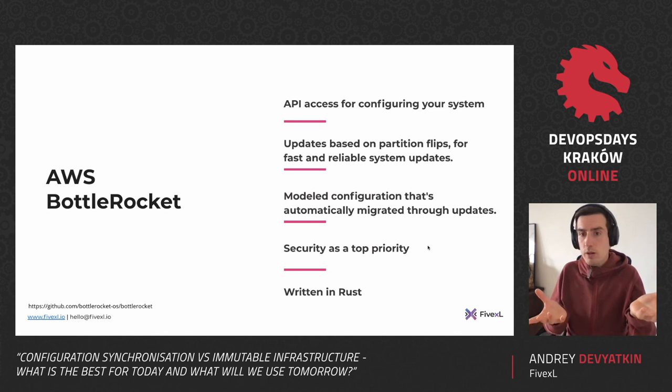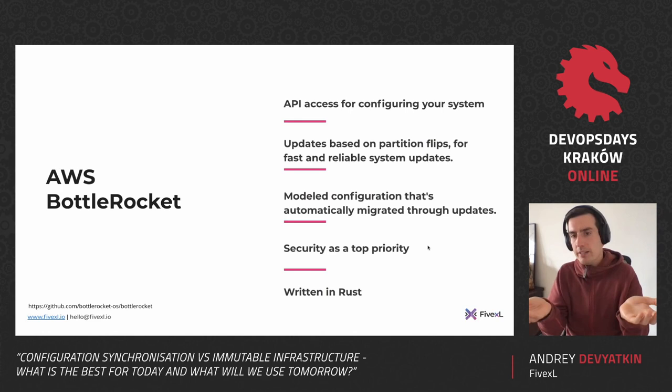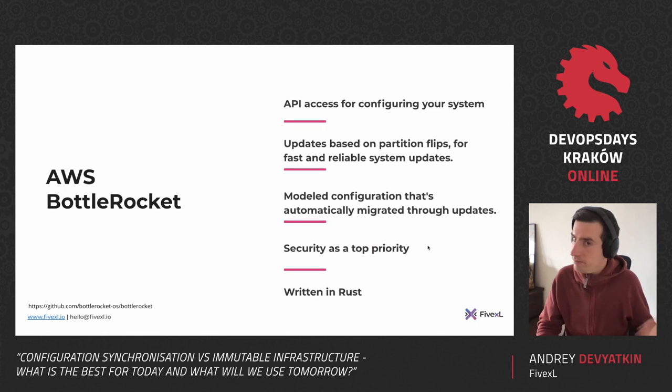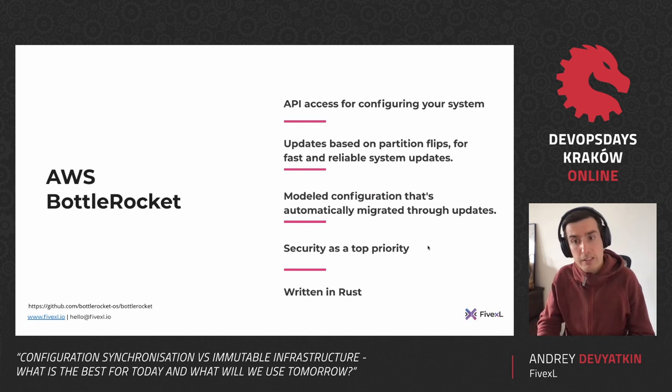You have updates based on partition swaps. The partitions are immutable. When you do an operating system update, you get a new partition and move over to it. If it doesn't work, you roll back to the previous one, and then the old one is discarded. It's immutable by default — there is no place for configuration drift to accumulate. It's a modular configuration, and there are automated updates so you don't need to log in and install them.